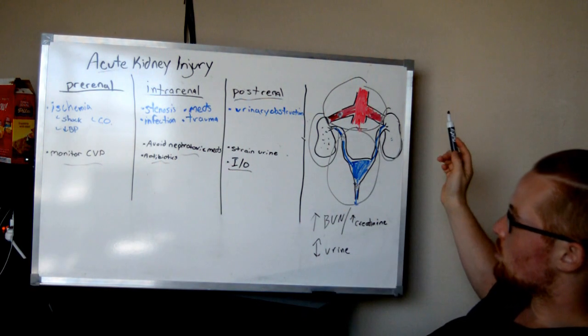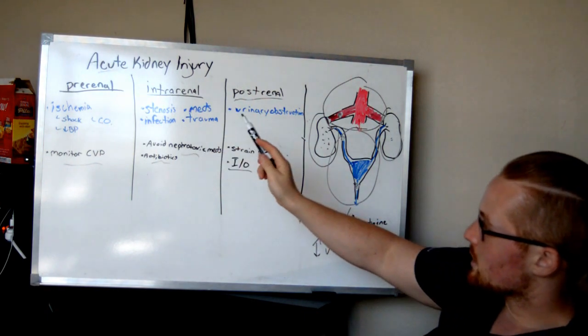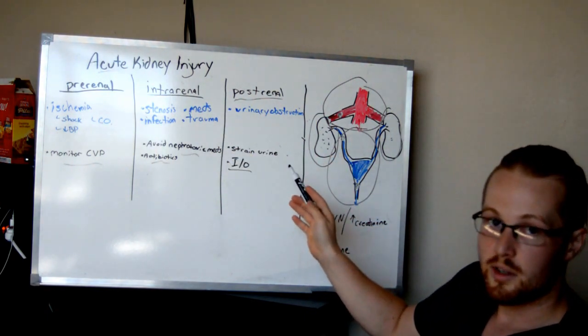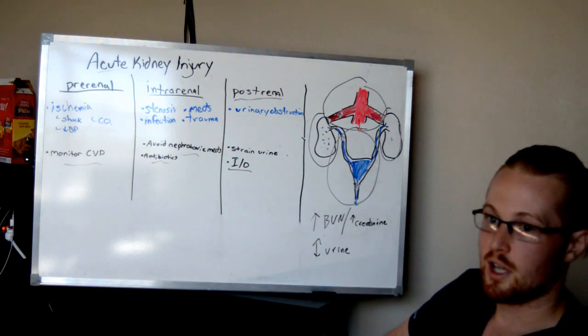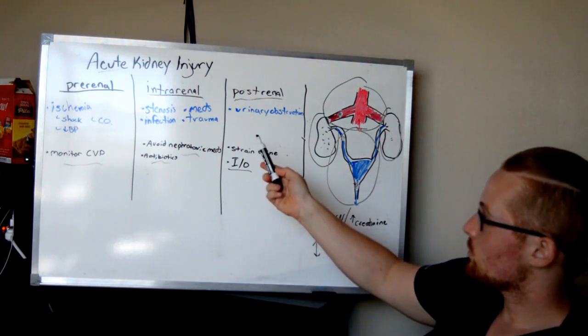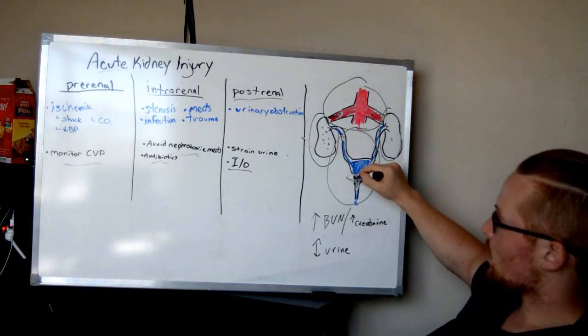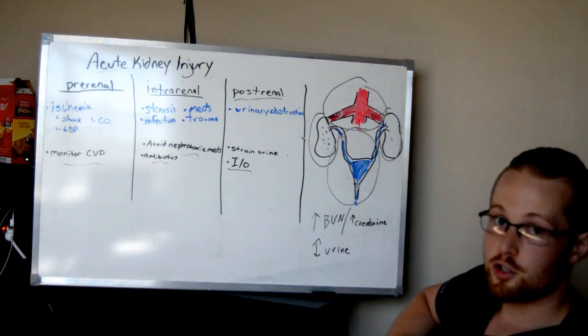And so, acute kidney injury as a whole, really, you've got to figure out what's the cause. You'll see it all the time, but there's so many causes for it that no picture is really ever the same. So, the best thing to do with acute kidney injury is break it down and figure out where the cause is. And once you know the cause, then treat that cause specifically.